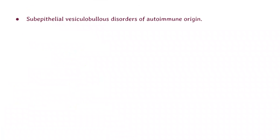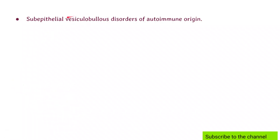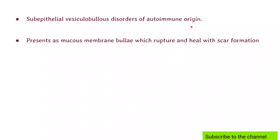This is a disease which is found in pemphigoid disorders. Pemphigoid disorders are sub-epithelial vesiculobullous disorders of autoimmune origin. This means that vesicles and bullae are seen, with sub-epithelial presentation, and it is of autoimmune origin — some antibodies are involved, which we'll be discussing.